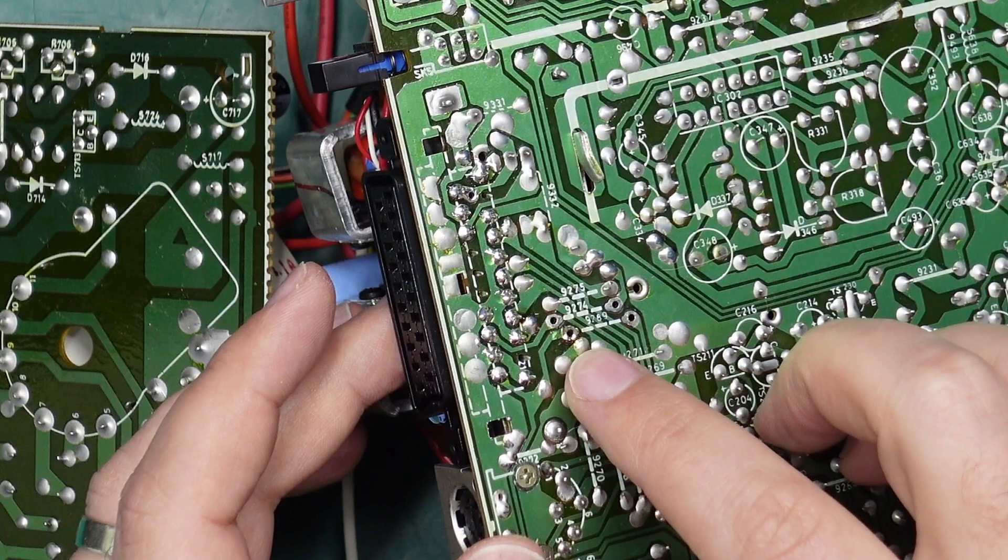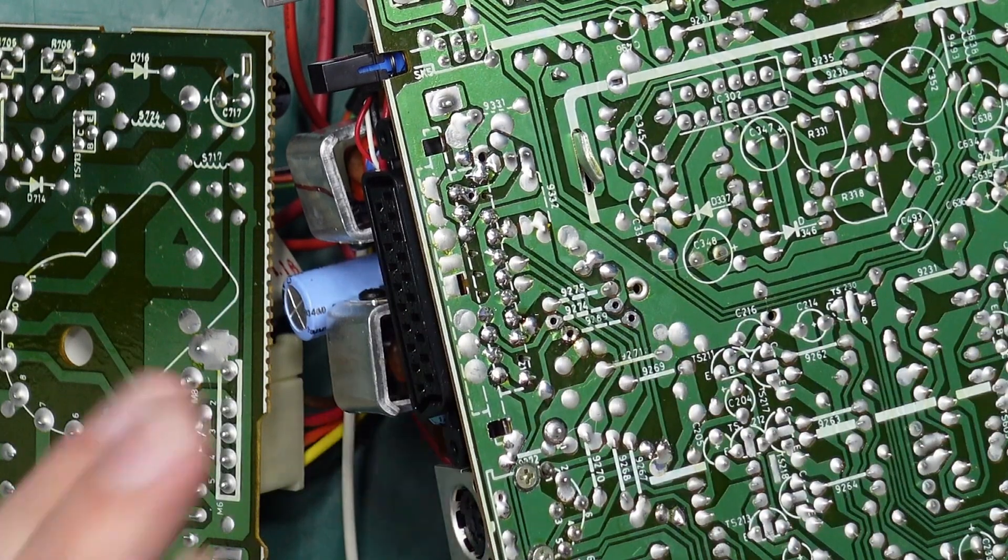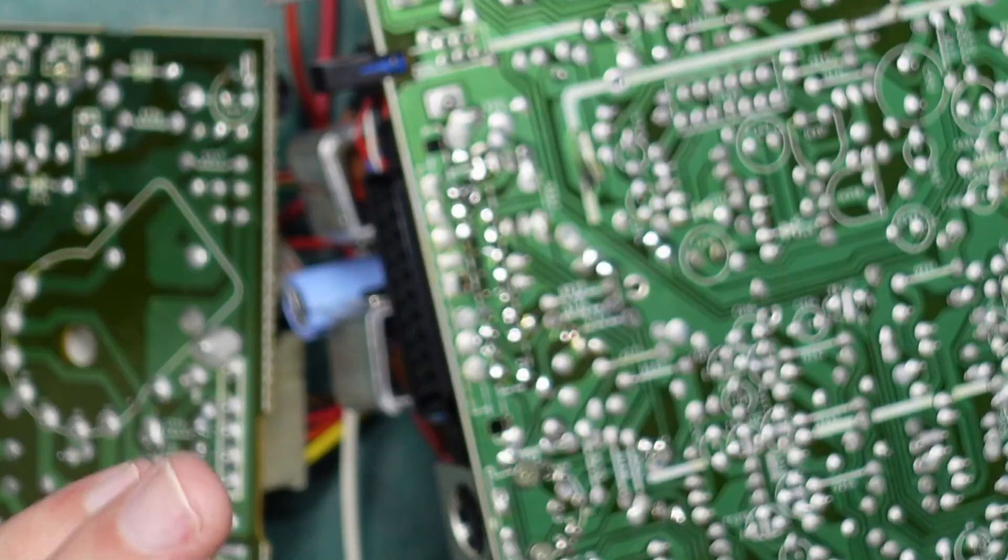So instead of installing a jumper at 9789 we're actually going to put in a 2.2k resistor just to lower that composite video signal a little bit.